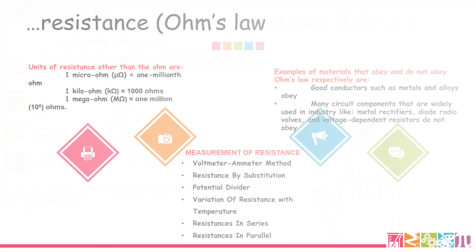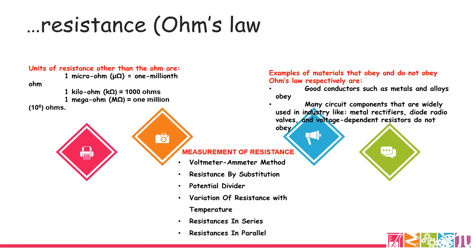The unit of resistance is ohms, the unit of voltage is volts, and current is in amperes. Other units of resistance include: one micro-ohm, which equals one millionth of an ohm (10⁻⁶ Ω); one kilo-ohm, which equals 1000 ohms (10³ Ω); and one mega-ohm, which equals one million ohms (10⁶ Ω).